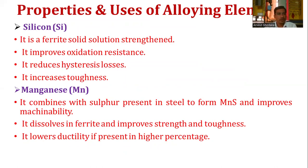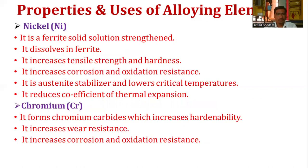Silicon also reduces hysteresis losses and increases toughness. Manganese combines with sulfur in steel to form manganese sulfide, improving machinability. It dissolves in ferrite and improves strength and toughness, but lowers ductility if present in higher percentages.